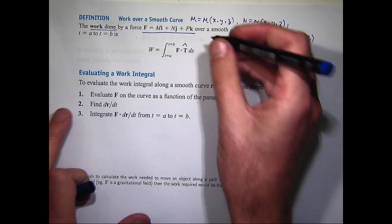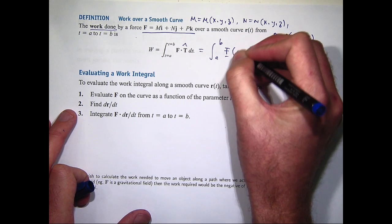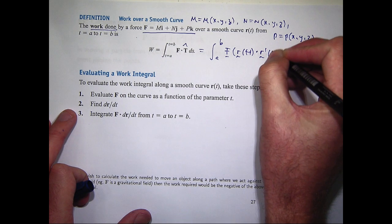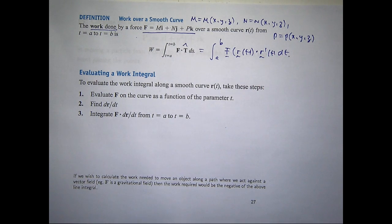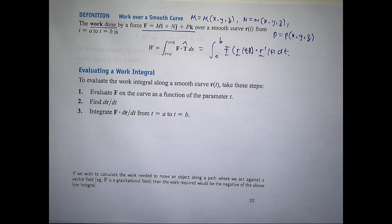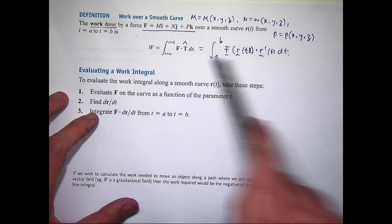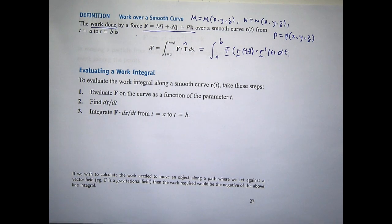And the work done by this force over this smooth curve from one point to another point for T values is just this. So in other words, if you want to write this out again, it's just the following. So this is quite an abstract setting, but this is actually from a computational point of view very, very useful. So here I've broken it down into steps.